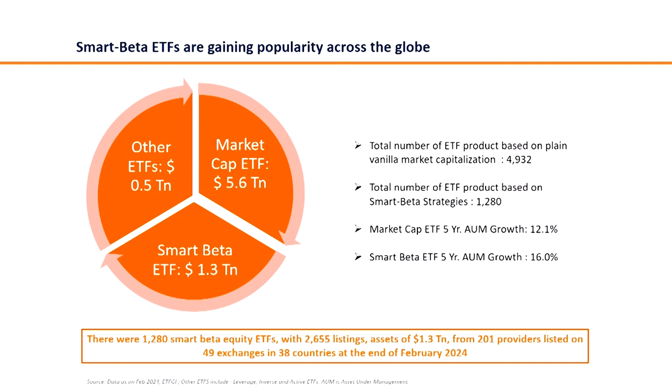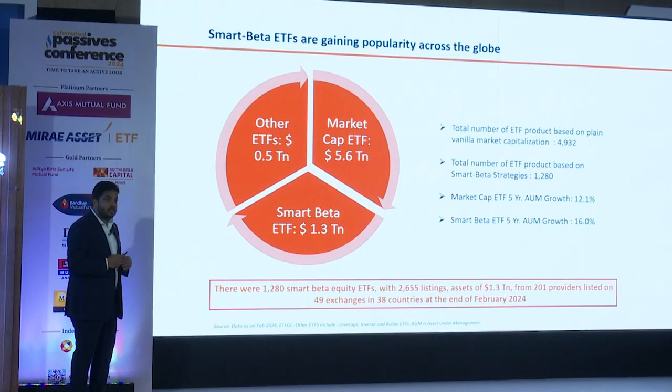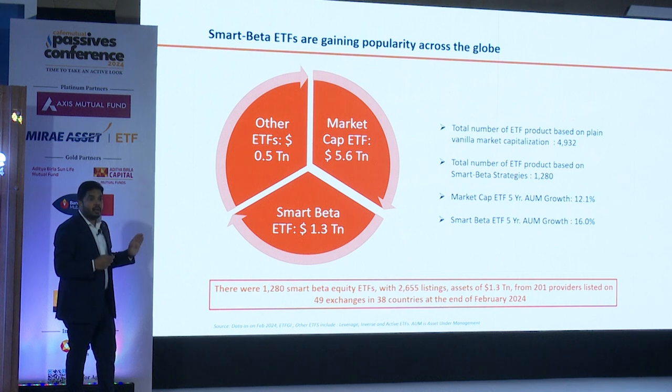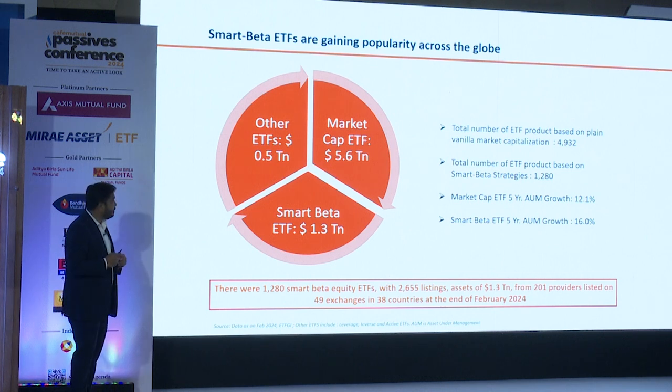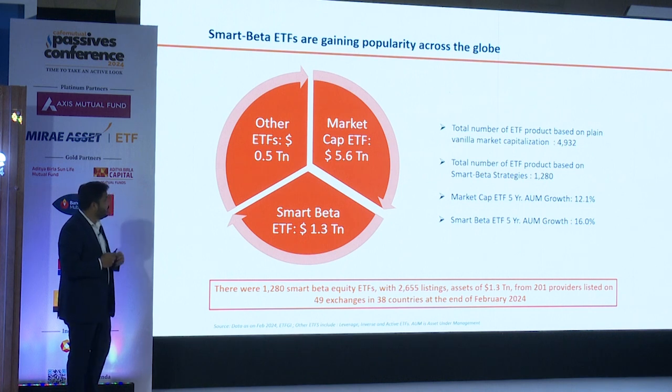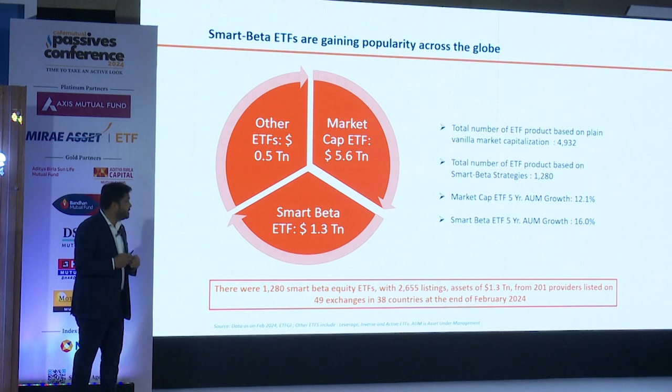The only thing which changes will be the investors' investment horizon. And for these reasons, smart beta has grown very popular globally. Right now, if you look at smart beta ETFs, roughly $1.3 trillion is in smart beta products. There are almost 1,200 smart beta ETFs, and in the last five years, the AUM has grown by almost 16%, while the remaining market-cap-based ETF AUM has grown by 12%. And this is one very interesting slide.